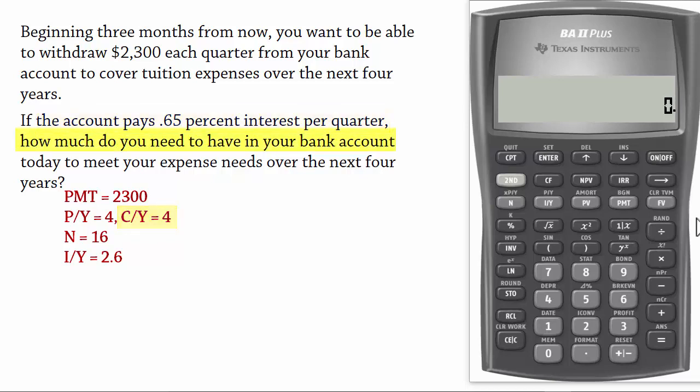How much do you need to have in your bank account today requires us to compute present value PV. Since we are making withdrawals, at the end of the 4 years, future value will be 0. So let's solve this on the calculator.